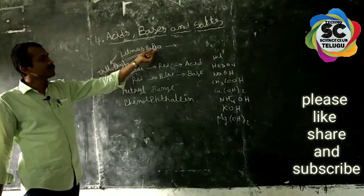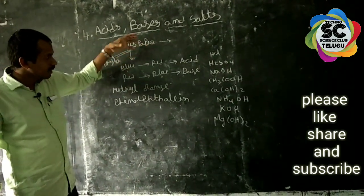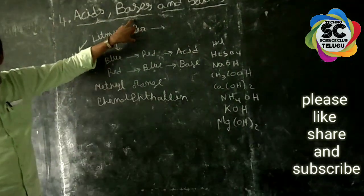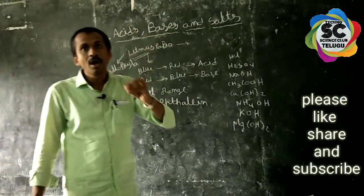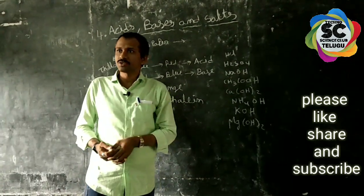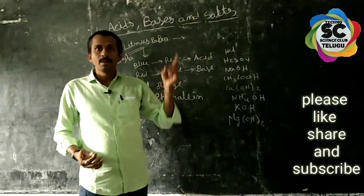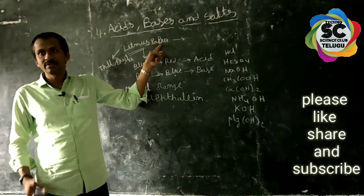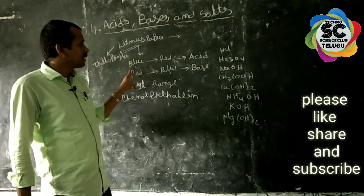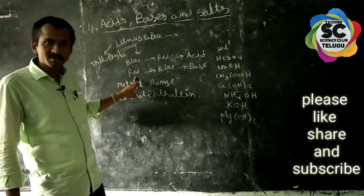First of all, litmus paper is an indicator used to test acids and bases. We already have litmus paper from 7th and 8th class. Litmus papers are of two types: blue litmus and red litmus — a blue color litmus paper and a red color litmus paper.